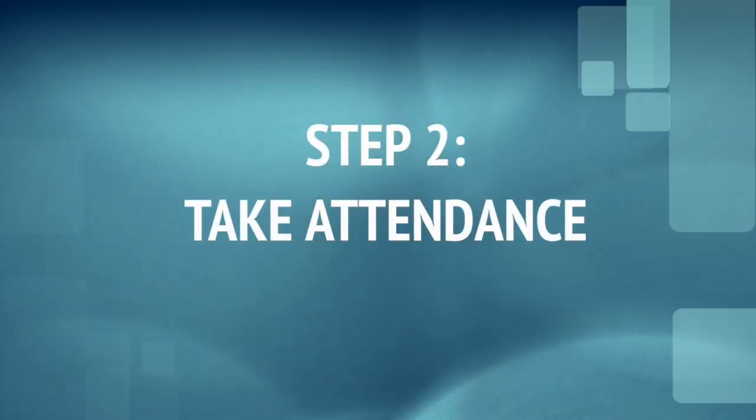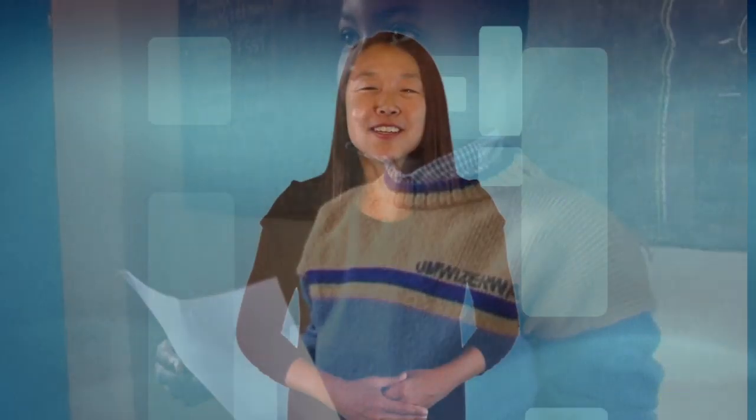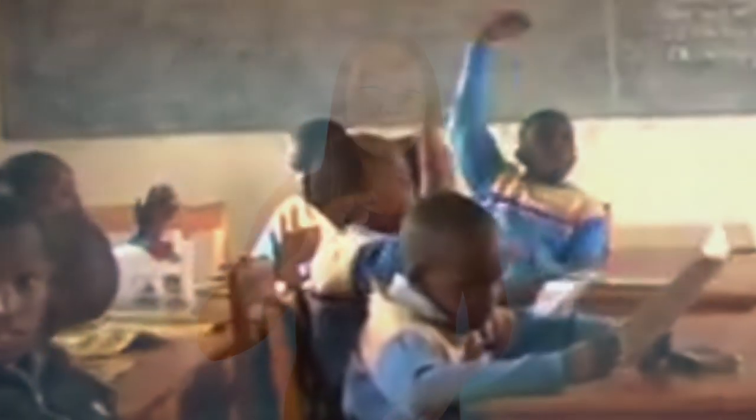Step 2: take attendance. You can call each student's name and have them say 'here' or 'present.' Or if your students are old enough, you can ask for a student helper to do this. You can add more language to the interaction — have the helper ask 'Is Gina here?' and students answer 'I'm here.' Young learners love to help out, and this gives students more practice with English.